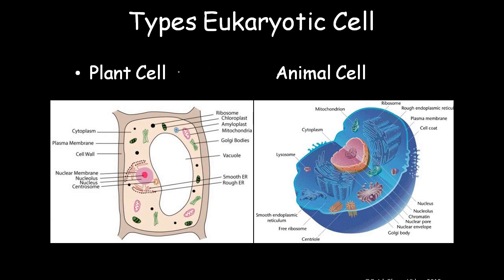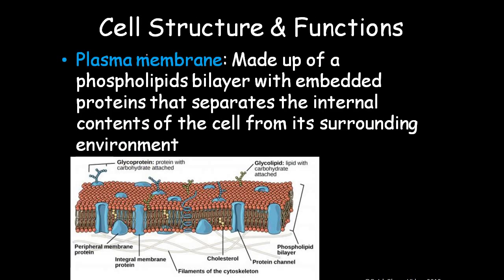We are discussing plant cell and animal cell. There are many organelles common to both, but in plant cells some differentiations are there which we will discuss. The plasma membrane is made up of phospholipid bilayer. It regulates the movement of material between the cell and the outside environment, with embedded proteins that separate the internal content of the cell from its surrounding environment.